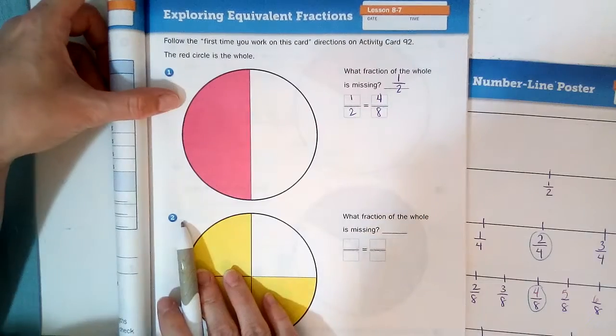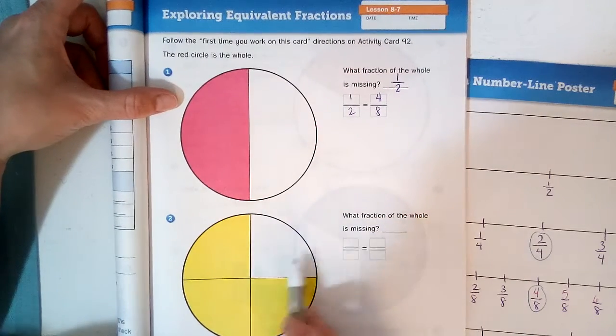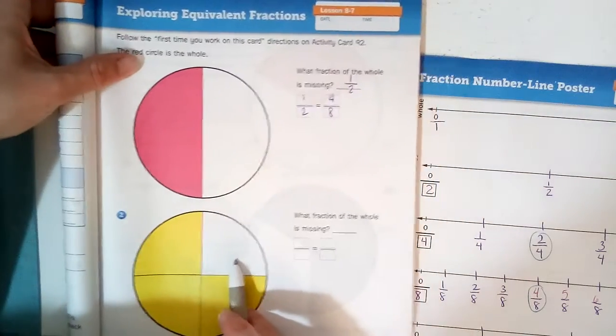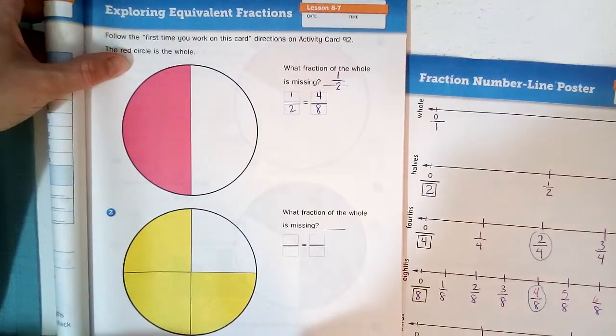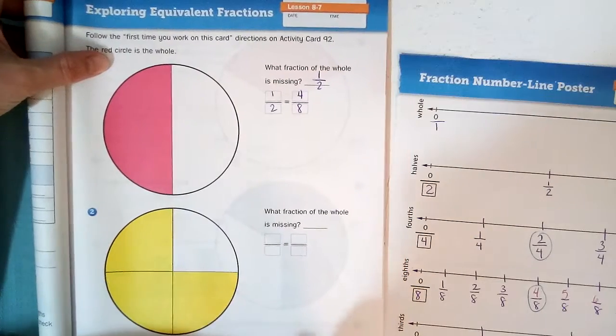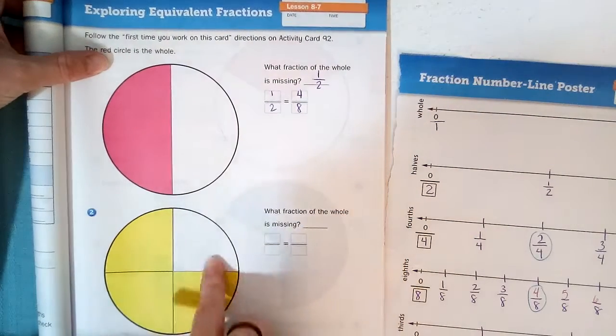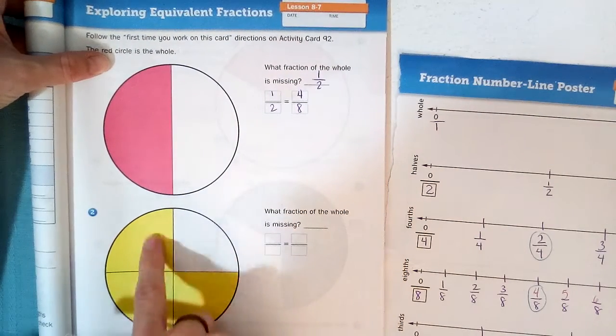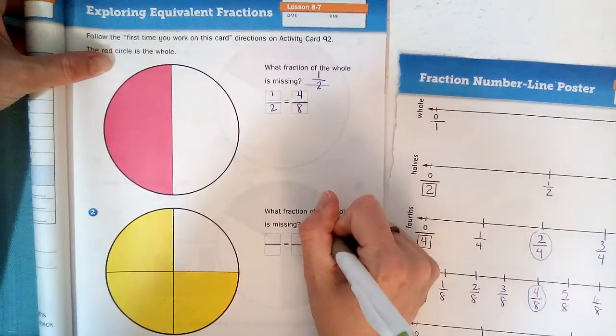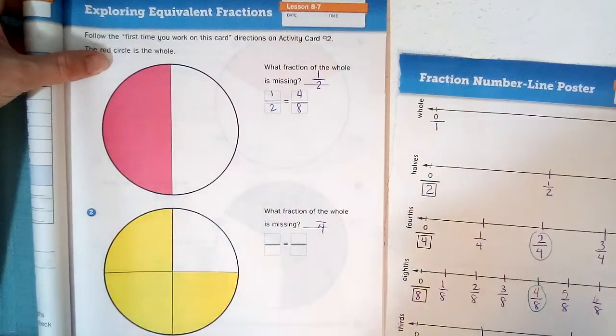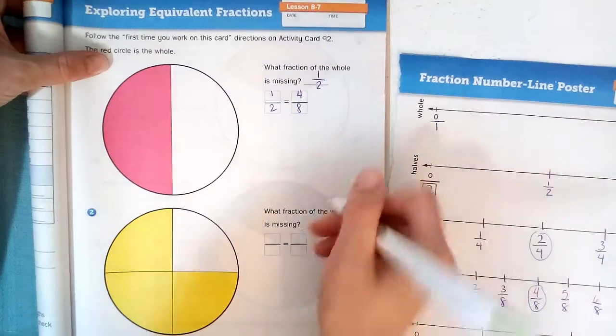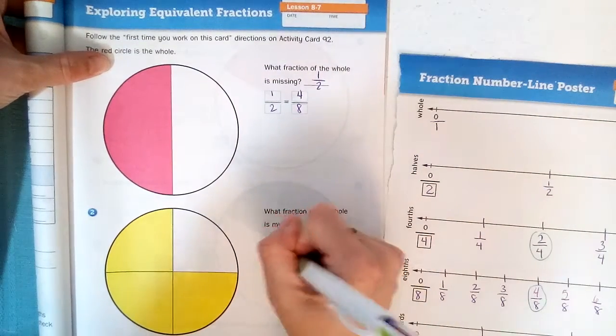Number two, what fraction of the whole is missing? Remember, it's saying missing, not there. This is there, but this one is missing. How much is missing? So ask yourself, how many pieces is it divided into? Total, one, two, three, four. So I know it's fourths, but how many of those fourths are missing? I see three are there, so one of them is gone. One fourth is missing, so one quarter.